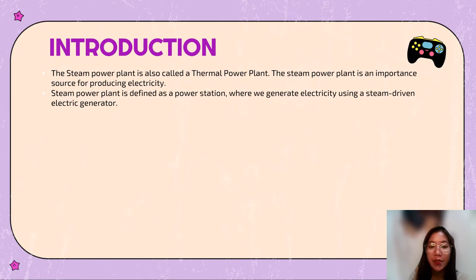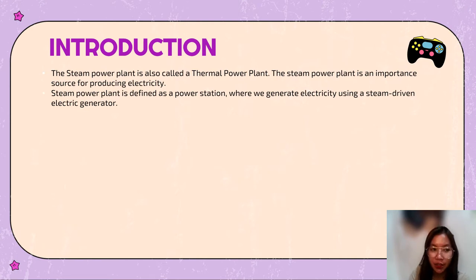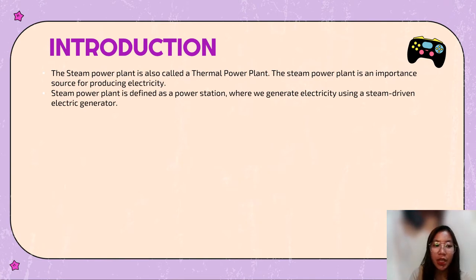The steam power plant is also called a thermal power plant. The steam power plant is an important source for producing electricity and it is also defined as a power station where we generate electricity using the steam-driven electric generator. This steam electric power station is a power station in which an electric generator is driven and water is heated.